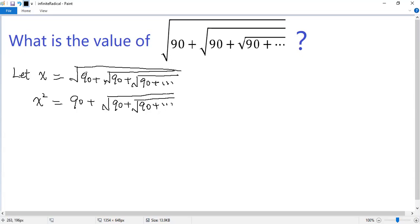See we get rid of one square root. But look at the second part. It is again an infinite radical. So if this radical is x, we get x squared equals 90 plus x.